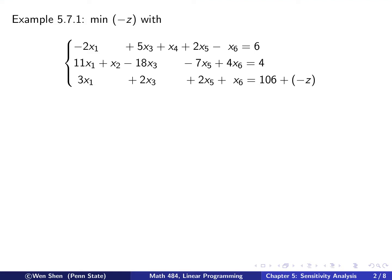We will take example 5.7.1 from the textbook. We want to minimize negative Z with this. So, these two are constraints, and that's the objective function. You see that the constraint is already in canonical form, and X2, X4 are the two basic variables. And the basic solution is feasible.